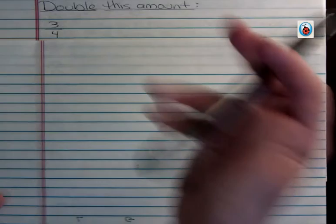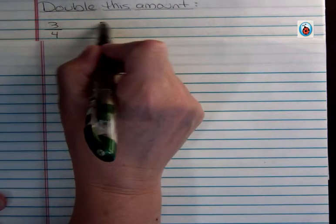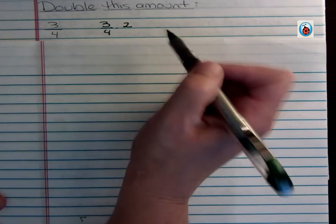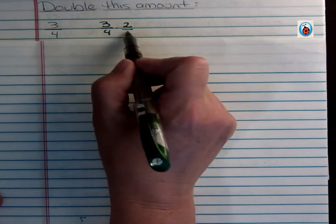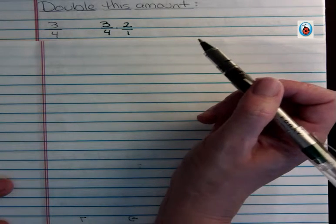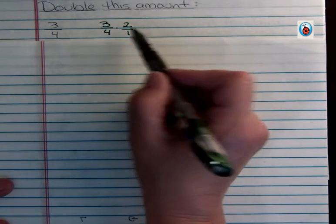So when we say double something, what we're saying is multiply it by 2. So doubling something would be times 2, and if you're working with fractions you want to think of that as 2 over 1. You have to be able to do this in your head, but I'm showing you on paper so that you can see what's happening.